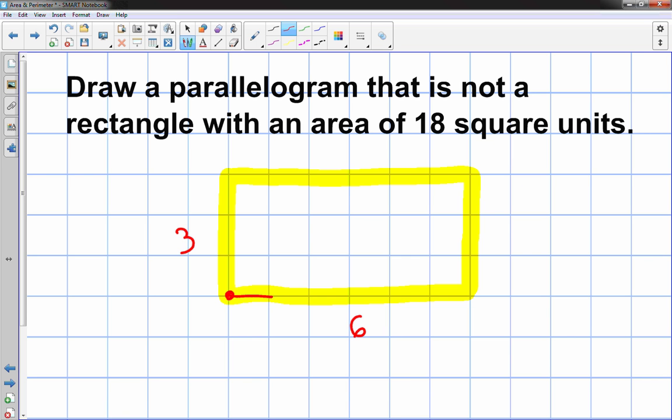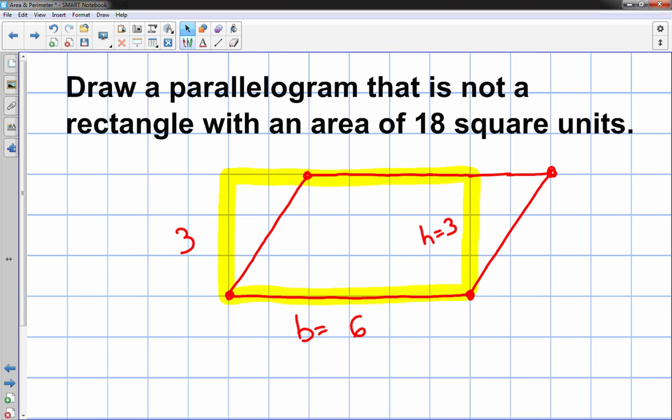So I'll start here and draw 6 and end right there. And now I just need it to be a little tilted on the top, so maybe I'll put a dot here and then do that. And then the top piece has to be 6 as well - 1, 2, 3, 4, 5, 6. So now I just kind of close it. So the height is 3, the base is equal to 6, so that parallelogram right there has an area of 18 square units.